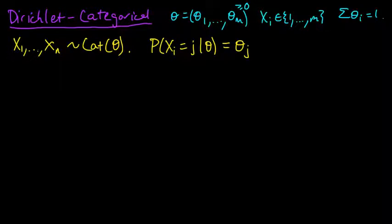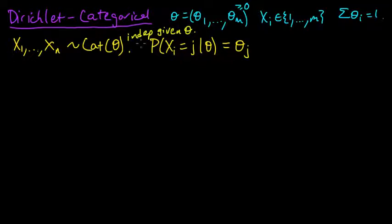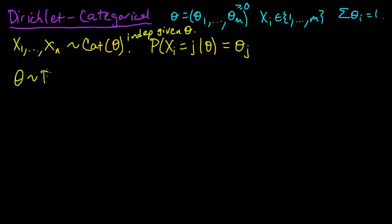These x's are conditionally independent given theta. I have to emphasize that because now we're going to put a distribution on theta. So theta, the parameter for these x's, will follow a Dirichlet — sometimes we just write Dir — Dirichlet with parameter alpha.